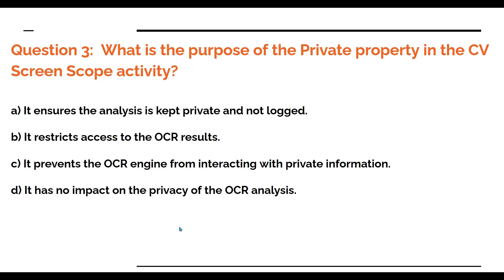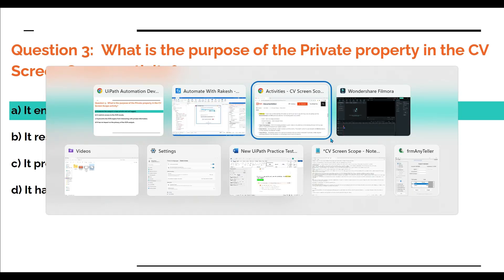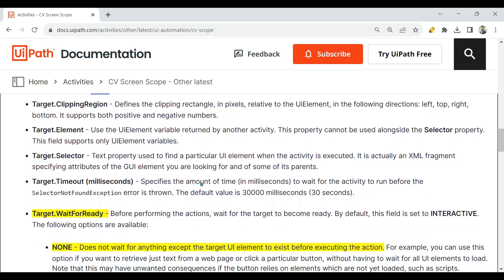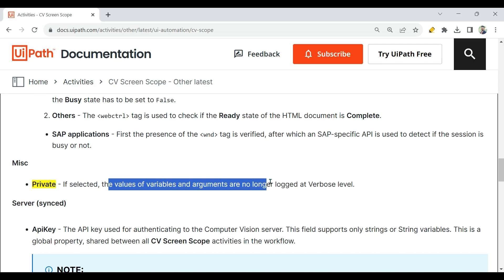Let me reveal the answer. The answer is: it ensures the analysis is kept private and not logged. So when you go for verbose mode, it doesn't log it. The definition from documentation states: when Private is selected, the values of variables and arguments are no longer logged at verbose level. This is the right definition.